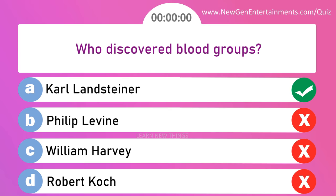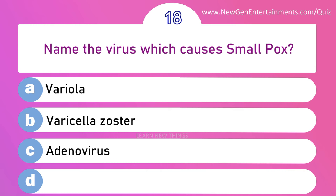Name the virus which causes smallpox — options: A) Variola, B) Varicella zoster, C) Adenovirus, and D) Influenza. Answer is option A: Variola.